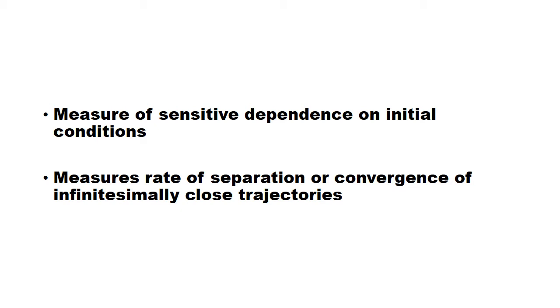If the dynamic system is chaotic, then two trajectories starting very close together will rapidly diverge from each other and they end up anywhere in the attractor.